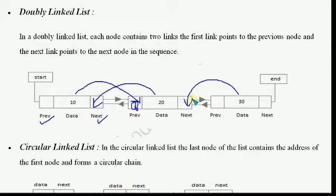In doubly linked list, the last node's next pointer stores null because if there is no next node, then the next pointer stores the null value. Doubly linked list will be explained in another video.